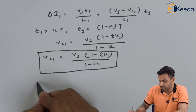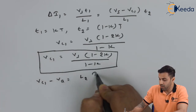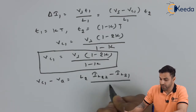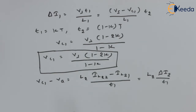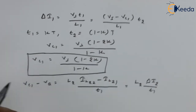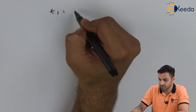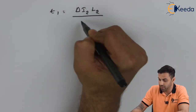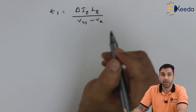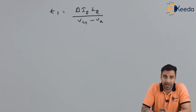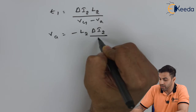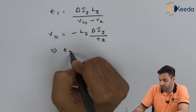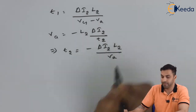For the second inductor, VC1 − Va = L2·(IL2_2 − IL2_1) / T1 = L2·Δi2 / T1, where IL2_2 is the peak current and IL2_1 is the starting current of L2. So T1 = Δi2·L2 / (VC1 − Va). When L2 discharges, Va = −L2·Δi2 / T2, which gives T2 = −Δi2·L2 / Va.